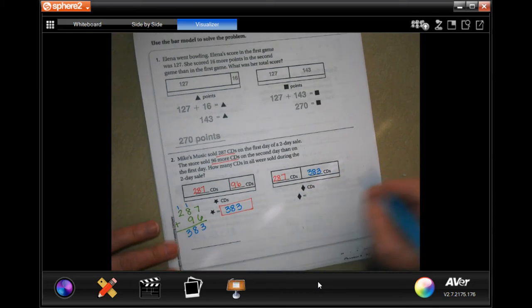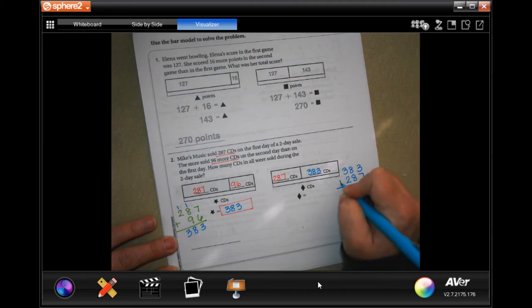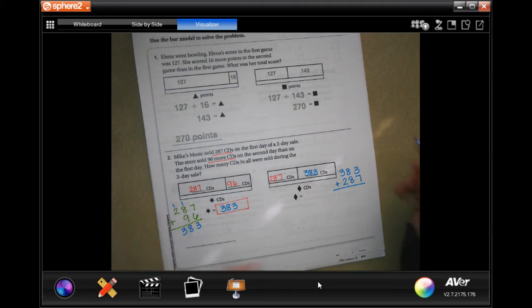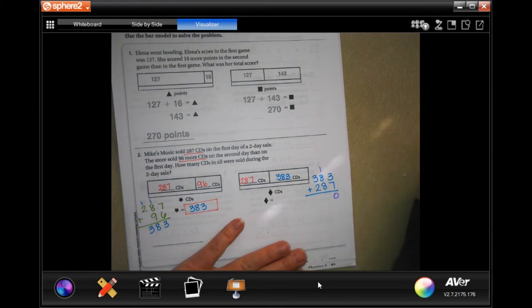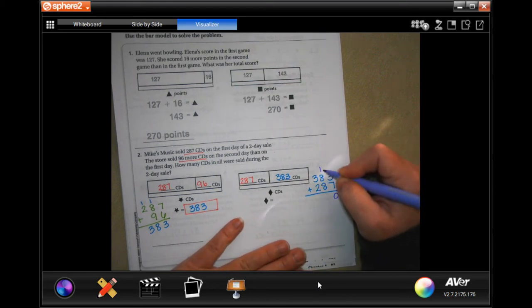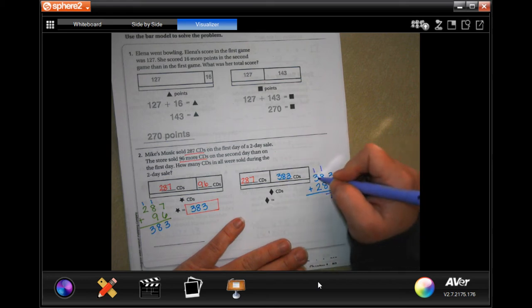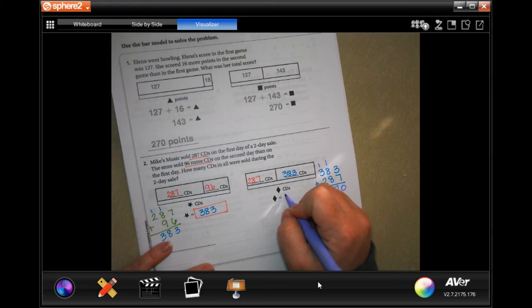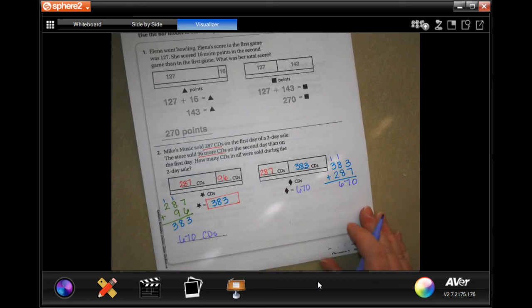So, now we're going to do 287 and 383. And we're going to add those together. 3 plus 7 is 10. So, we're going to carry the 1. 8 and 8 is 16 plus 1 is 17. Carry the 10 to it. 1 plus 3 is 4. Plus 2 is 6. So, 670 there. And 670 CDs.